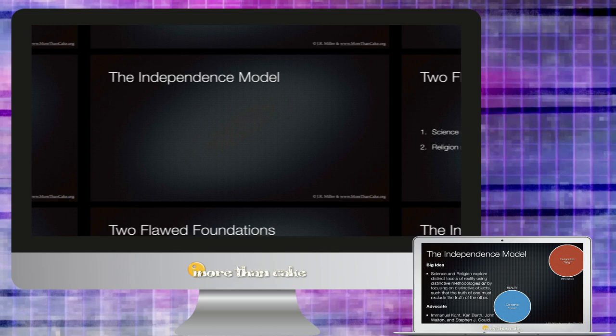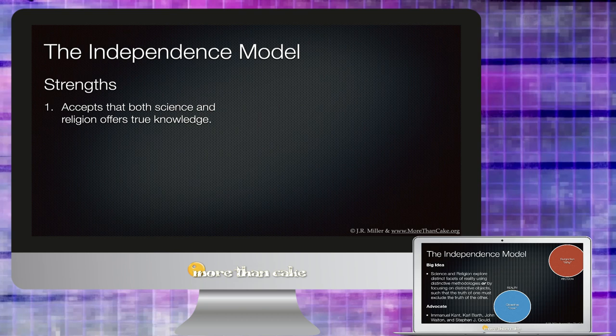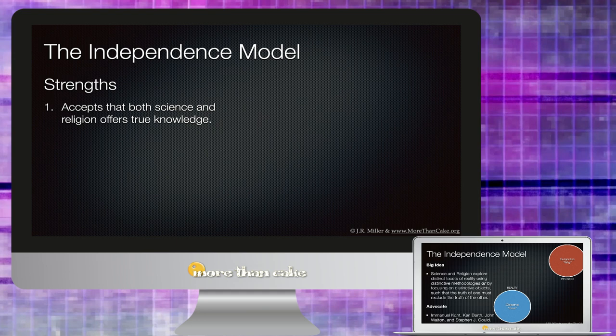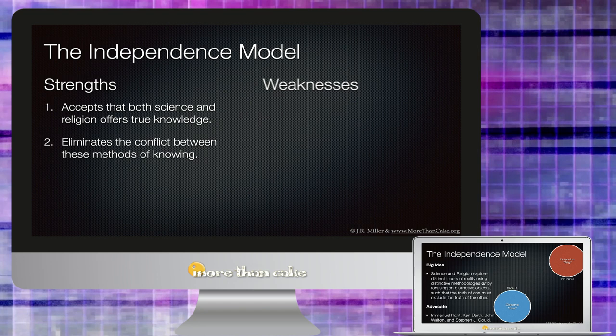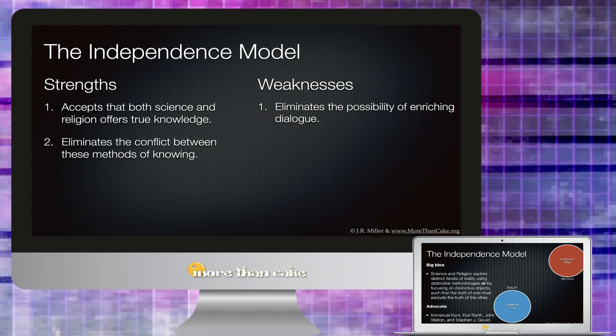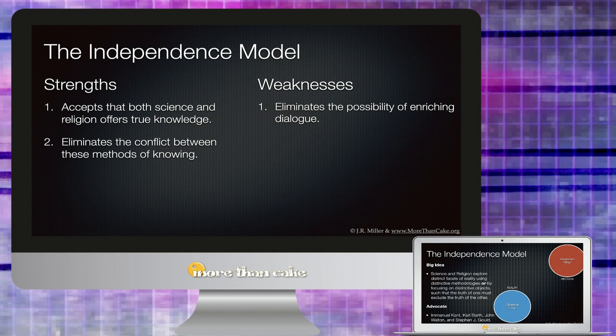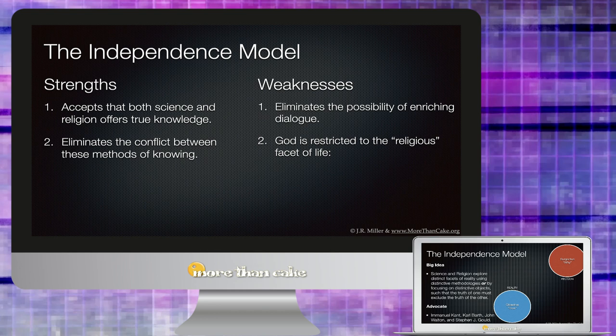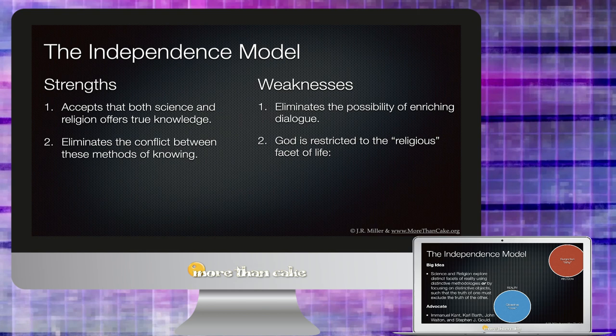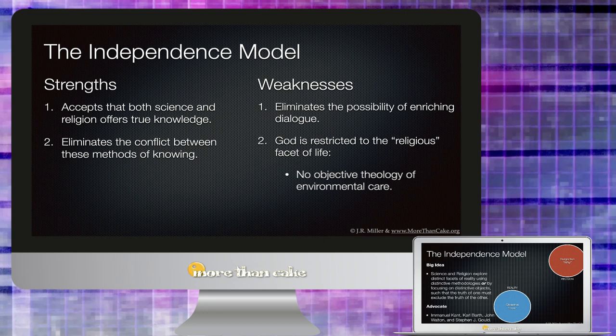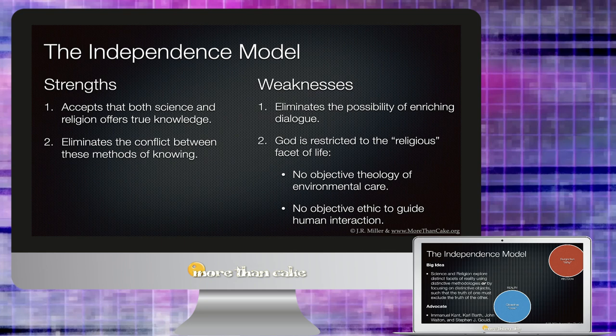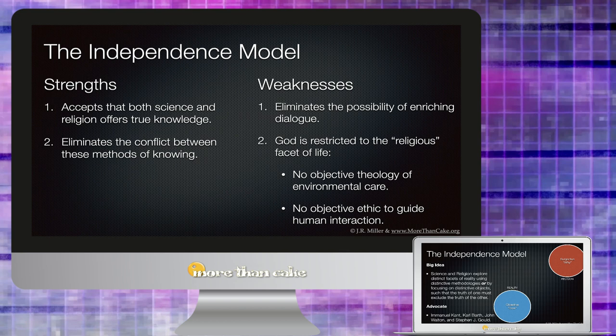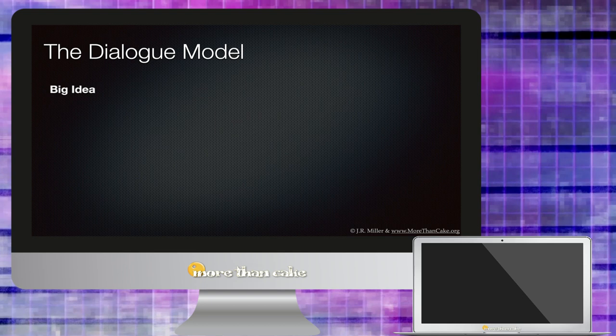However, what are the strengths and weaknesses of this Independence Model? Well, the first strength I think is that this model accepts that both science and religion offer true knowledge. I think that's important to recognize that both are a valid way of knowing. Second, in its own way it eliminates the conflict between these methods of knowing. Now I think that also sort of brings up the weaknesses of this Independence Model—it also eliminates the possibility of enriching dialogue. So there's no conflict, but there's also no possibility of dialogue either. So it gives with one hand, it sort of takes with the other. The second weakness here is that God is restricted to the religious facet of life, and this creates a huge divide in terms of practical faith living it out in the world around us. For example, if this model holds true, there's no objective theology for environmental care, there's no objective ethic to guide human interaction, because all theology remains the province of personal view or religious subjective opinion.